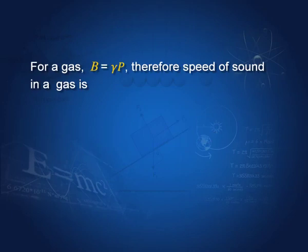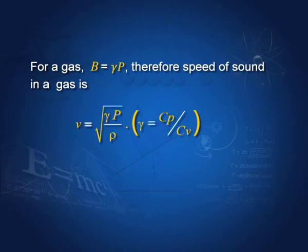For a gas, the bulk modulus equals gamma times p, where gamma is the ratio of Cp to Cv. Therefore, the velocity of sound is given by the square root of gamma p by rho.